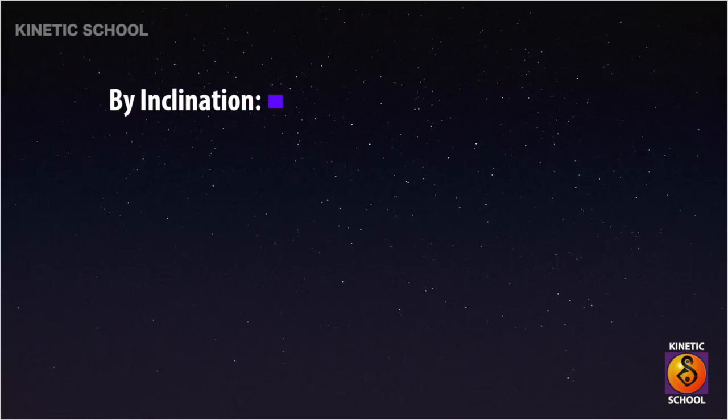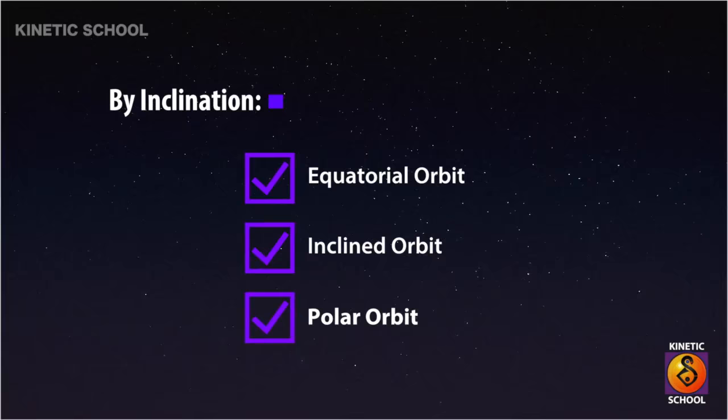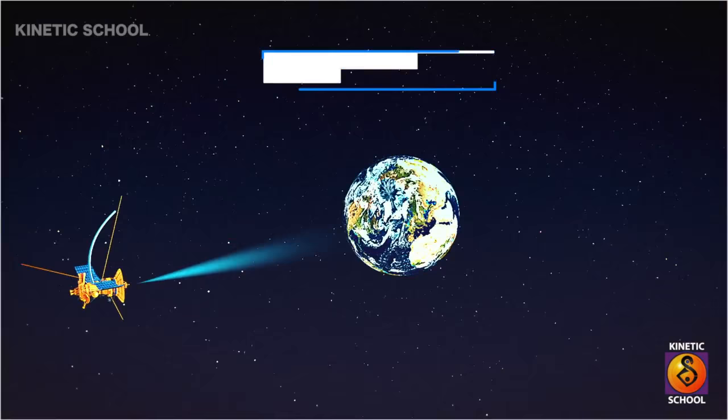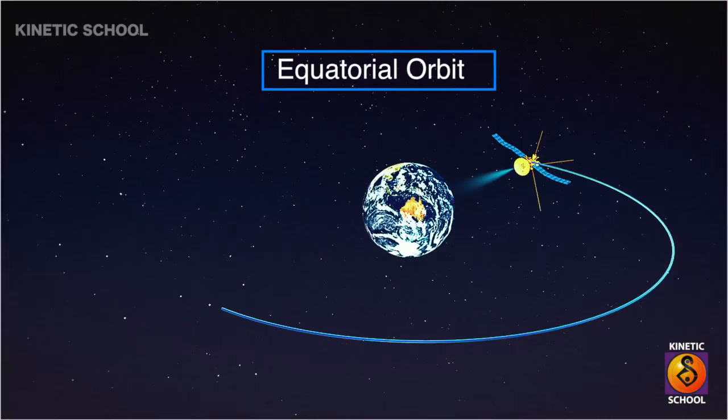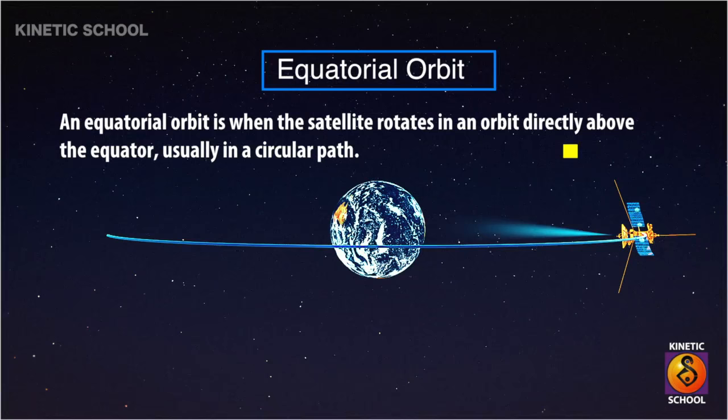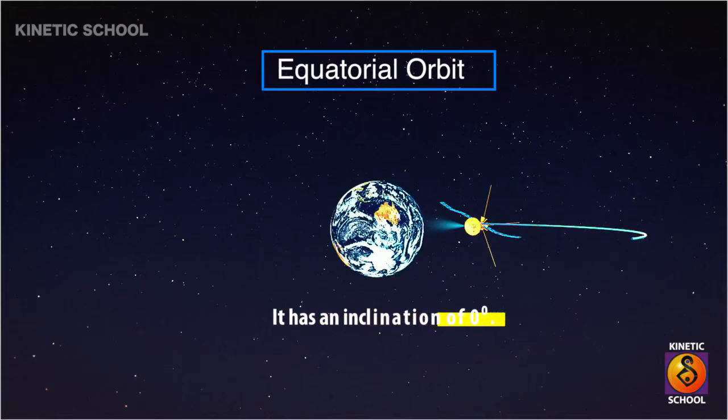By inclination, there are three kinds of satellite orbits: equatorial orbit, inclined orbit, and polar orbit. An equatorial orbit is when the satellite rotates in an orbit directly above the equator, usually in a circular path. It has an inclination of zero degrees.